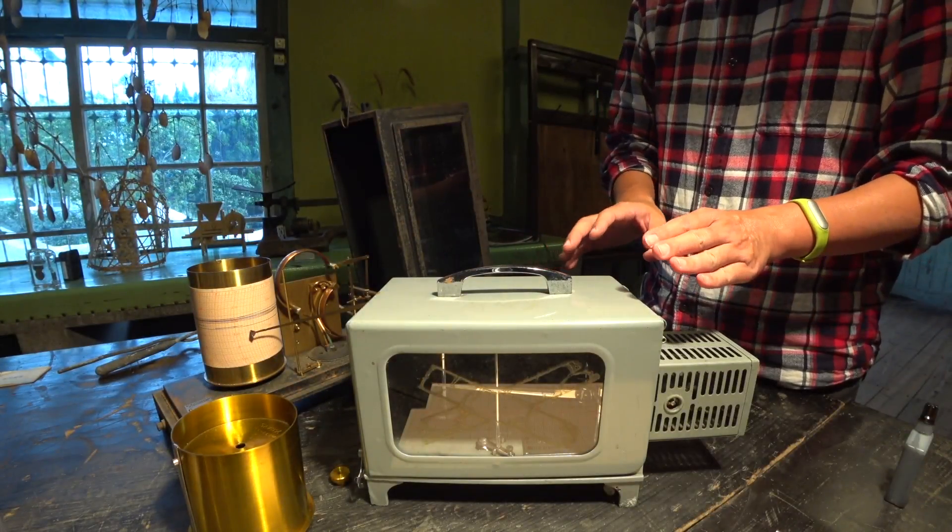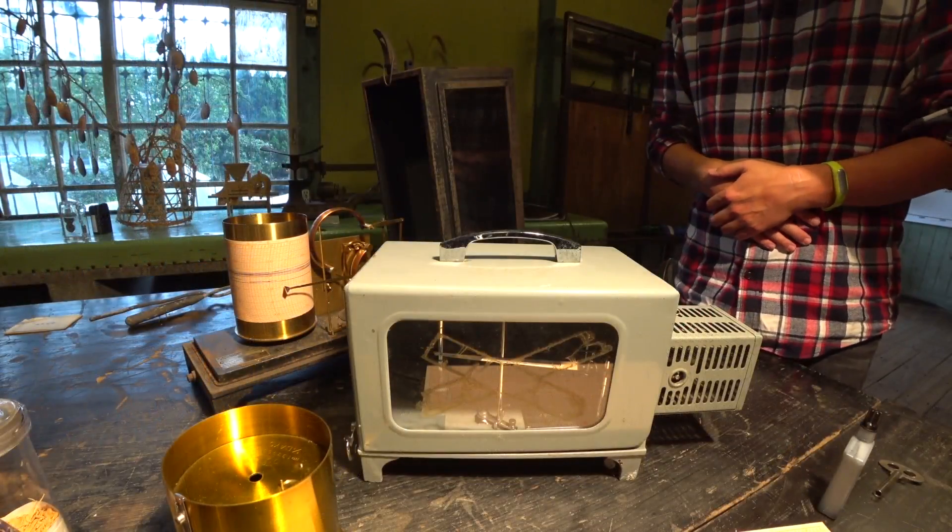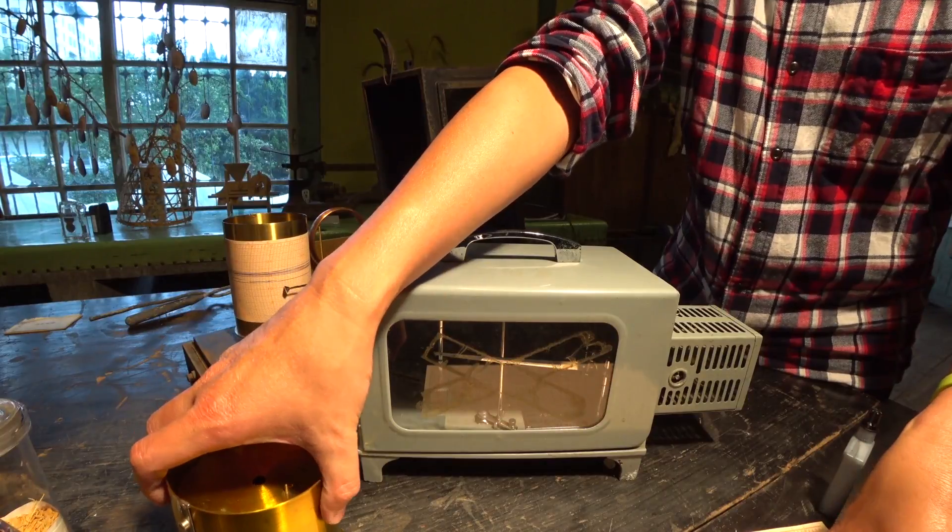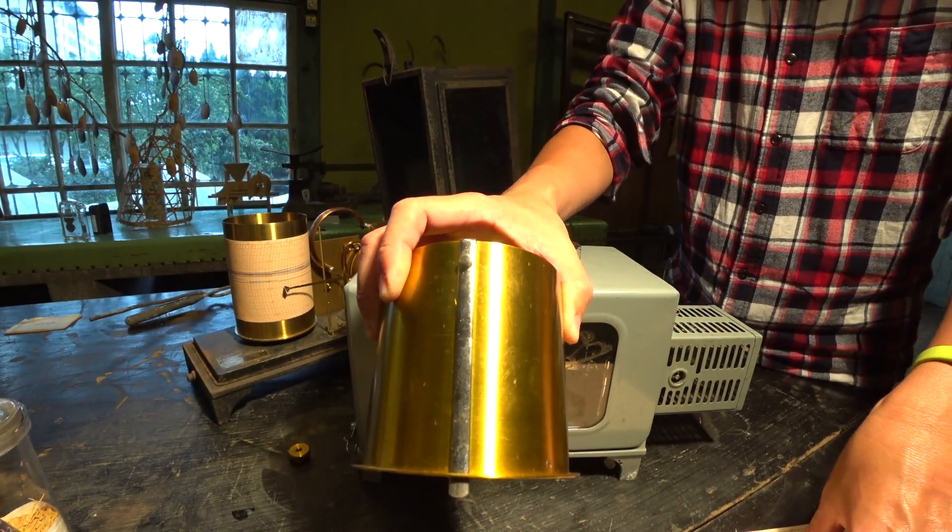我們現在把它組裝上去。現在來示範怎麼使用這個溫度記錄器。首先我們要把記錄紙裝在這個記錄用的圓桶上面。